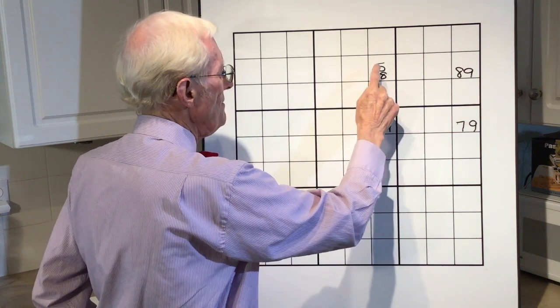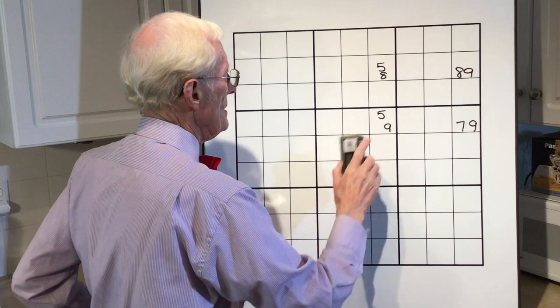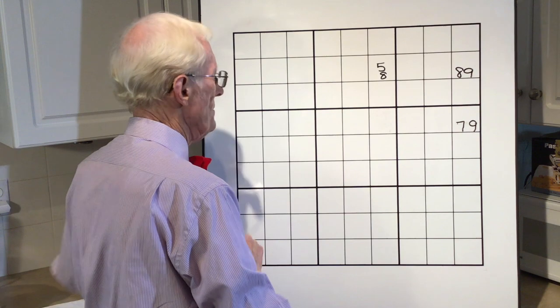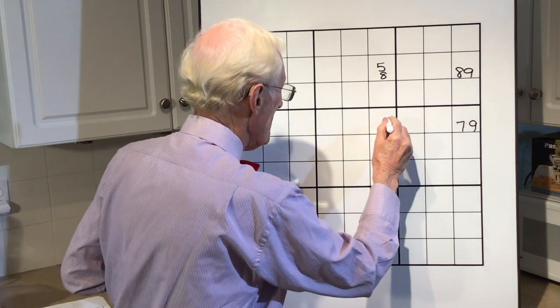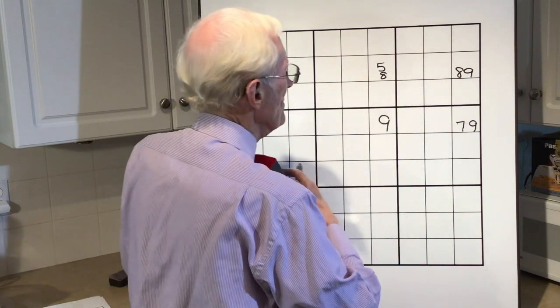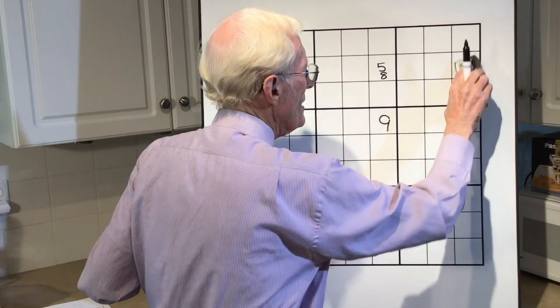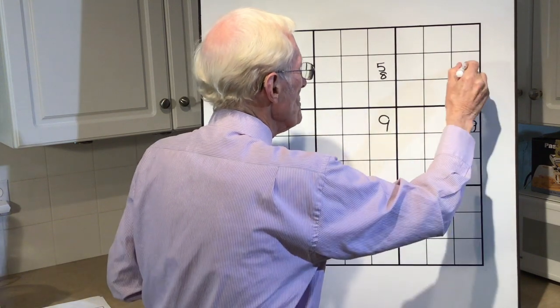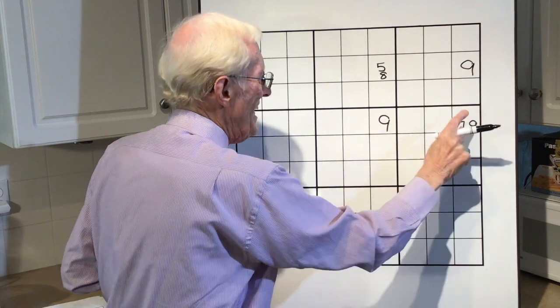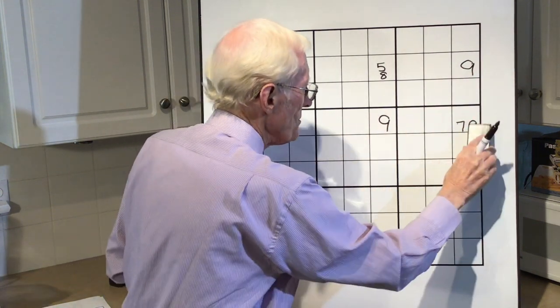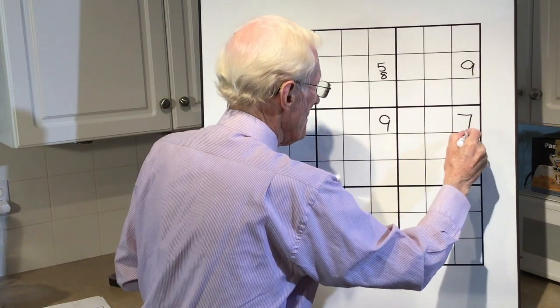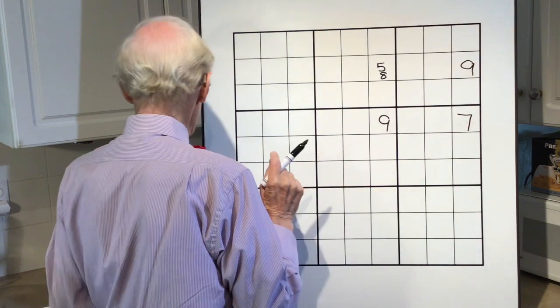If this is a 5, this becomes a 9. Okay? So, we'll change it to a 9. If this is an 8, this becomes a 9. If that becomes a 9, this 9 can see that 9 and that 9. That cannot be a 9. It becomes a 7. Similar to what we did last time. We'll make that a 7. See, that's how it works.